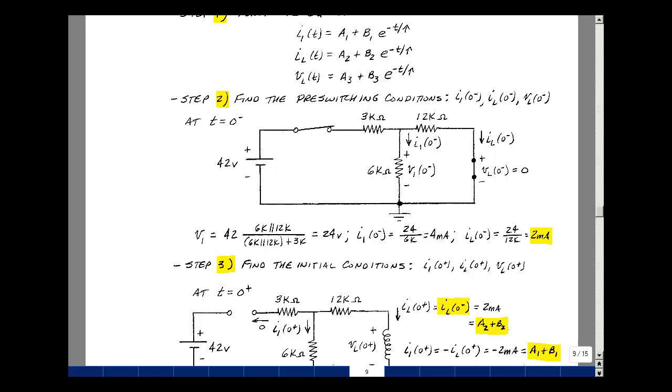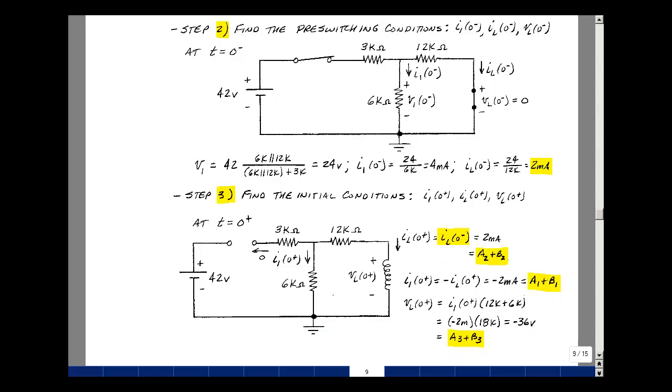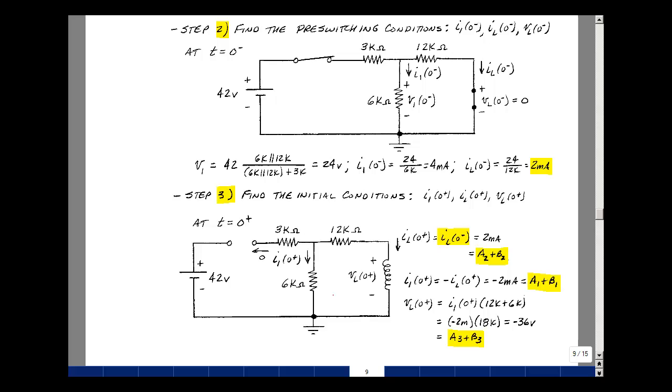The third step in our algorithm is to find the initial conditions. The current through an inductance cannot change instantaneously. It was 2 milliamps before we opened the switch, and so it must still be 2 milliamps after we opened the switch. That's going to be equal to A2 plus B2 times E to the minus T over tau, but T is equal to zero.